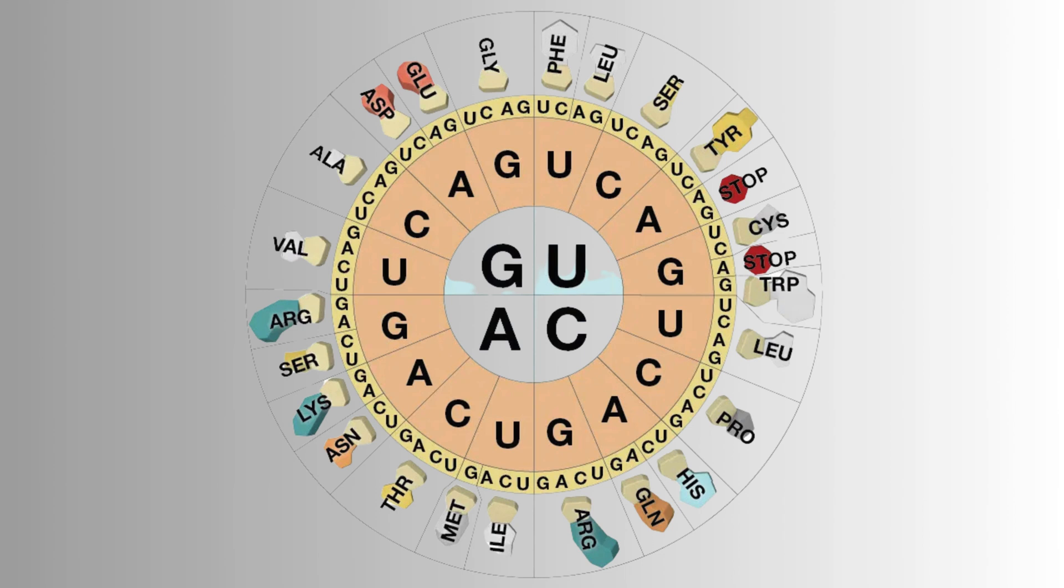Interestingly, the genetic code is nearly universal. Identical codons specify the same amino acids in most organisms, from bacteria to humans. This suggests that all life on Earth shares a common evolutionary origin.